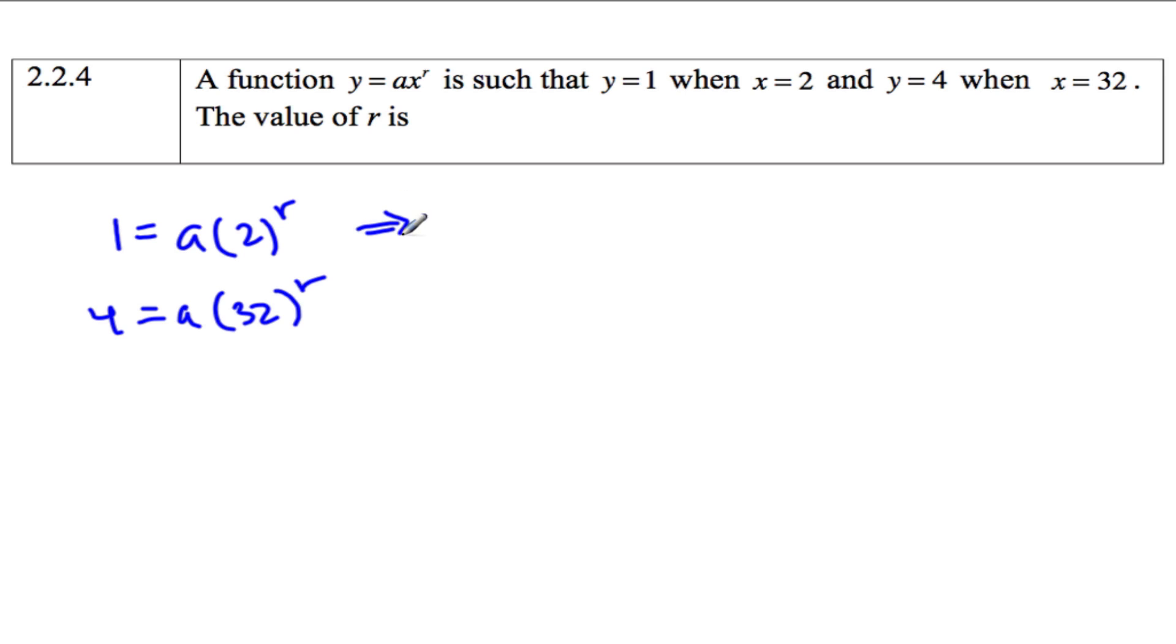If I solve for a from both of these, I have 1 over 2 to the r equals a, and I also have 4 over 32 to the r equals a.